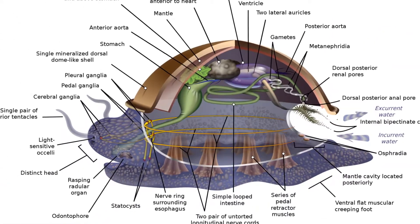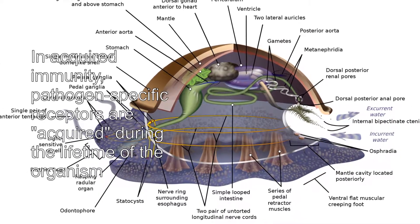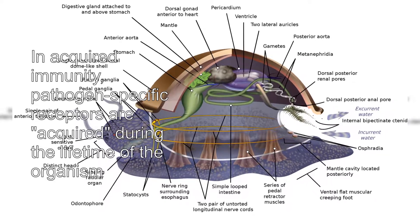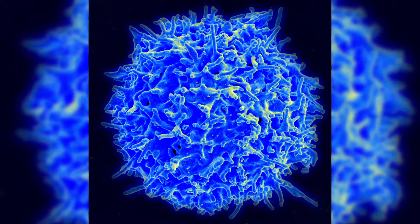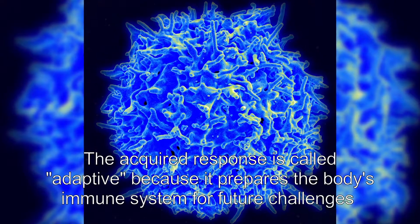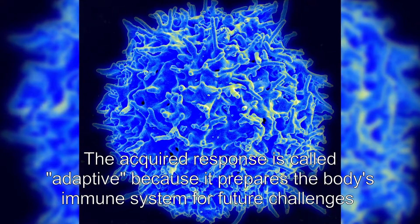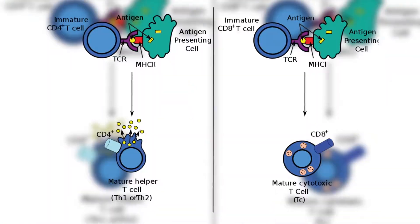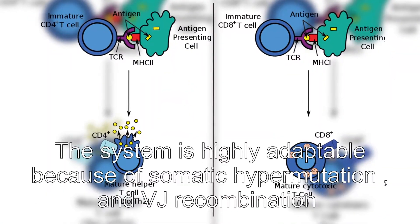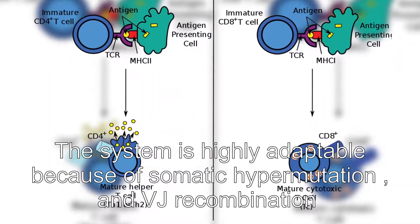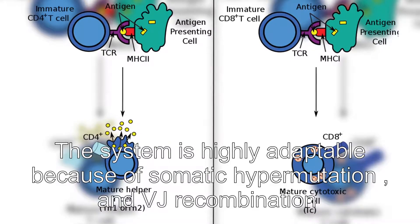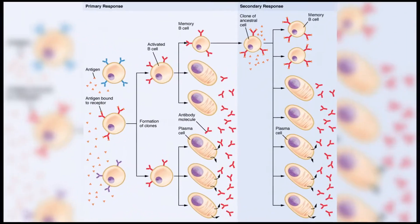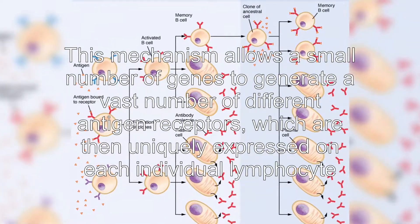Two main broad classes — antibody responses and cell-mediated immune responses — are carried out by two different lymphocytes. In antibody responses, B cells are activated to secrete antibodies, which are proteins also known as immunoglobulins. Antibodies travel through the bloodstream and bind to the foreign antigen causing it to inactivate, which does not allow the antigen to bind to the host. In acquired immunity, pathogen-specific receptors are acquired during the lifetime of the organism.